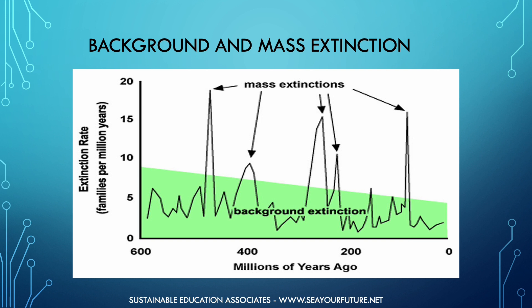Over time, all species eventually become extinct. The naturally occurring low rate of extinction is referred to as background extinction. Fortunately, Earth has its own insurance plan in the form of biodiversity that has always provided a means for life to go on. This natural capital also allows time for new species to evolve to fill vacant roles.